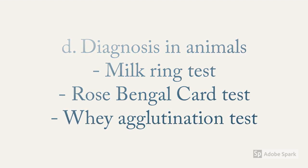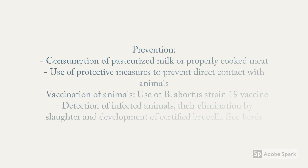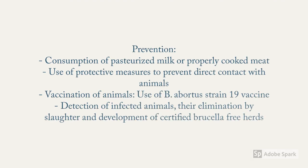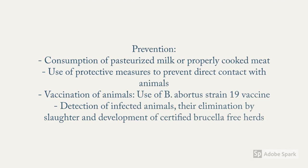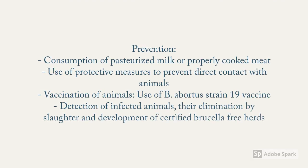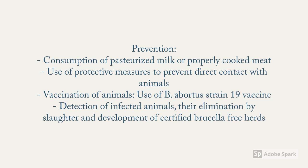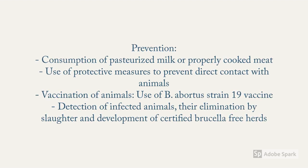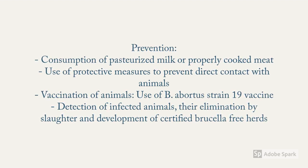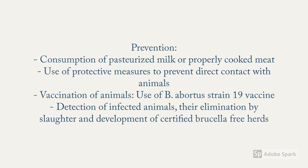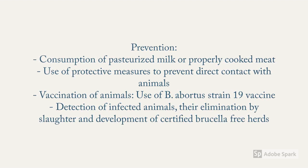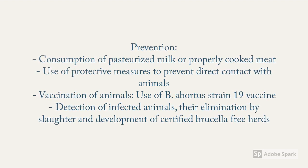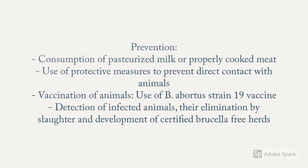Diagnosis in animals can be made using the milk ring test, Rose Bengal card test, or Brucella agglutination test — this will be discussed further in the microbiology section. Preventive measures include consumption of pasteurized milk or properly cooked meat, use of protective equipment to prevent direct contact with animals, vaccination of animals, detection and elimination of infected animals by slaughter, and development of certified Brucella-free herds.